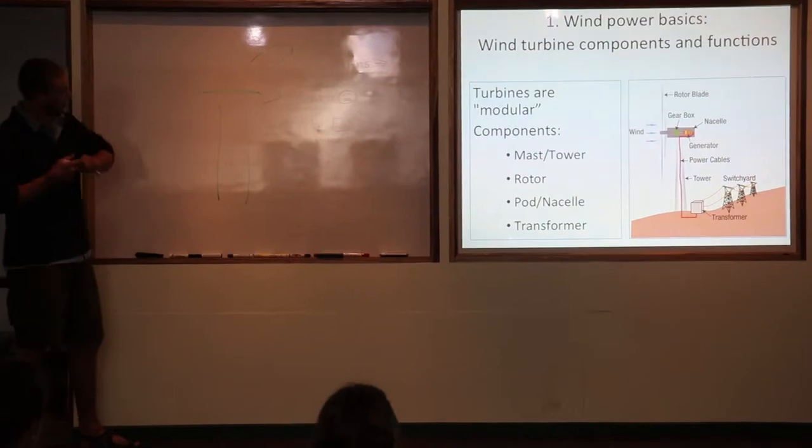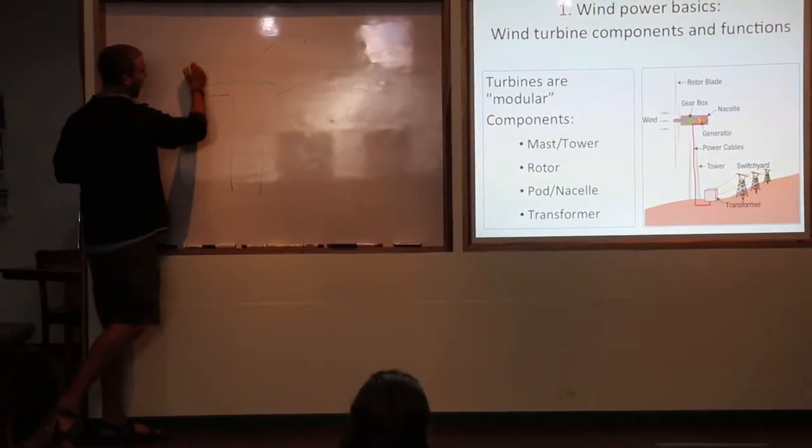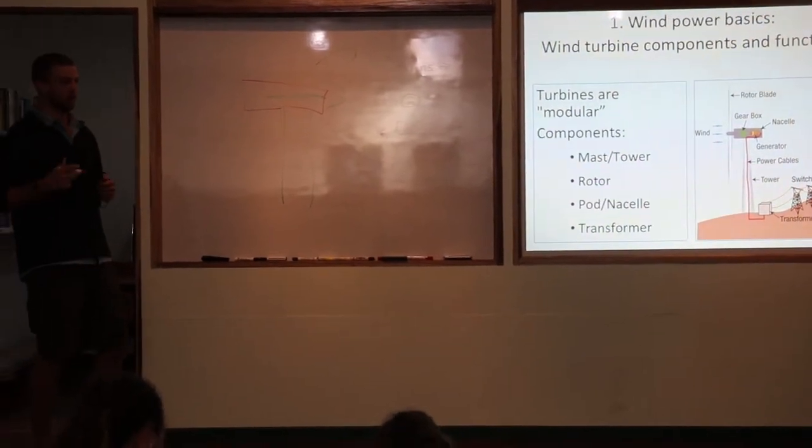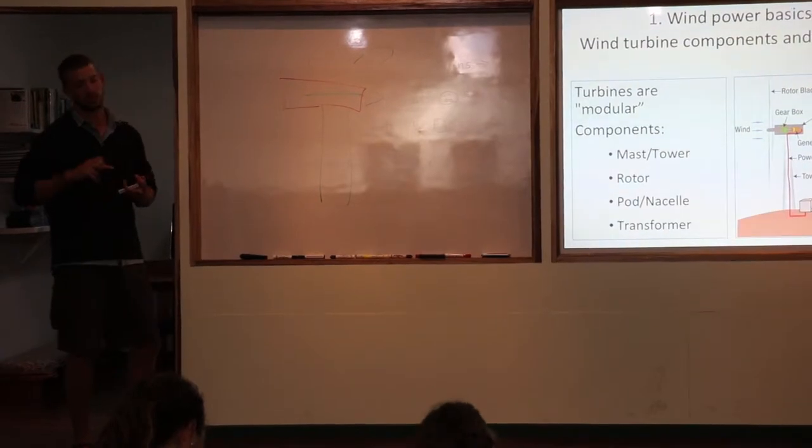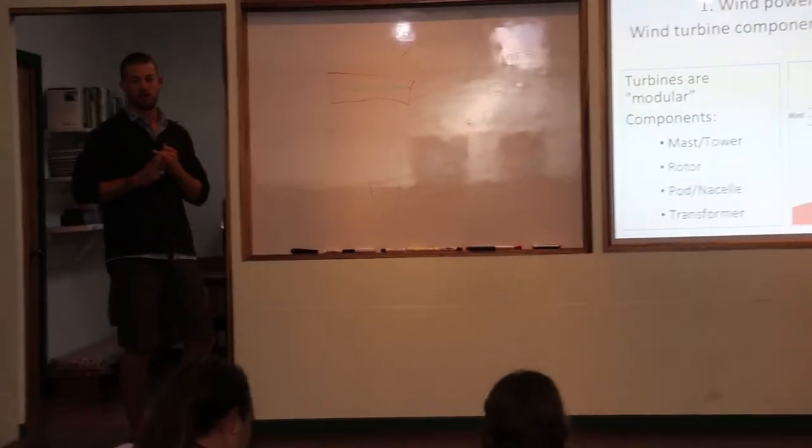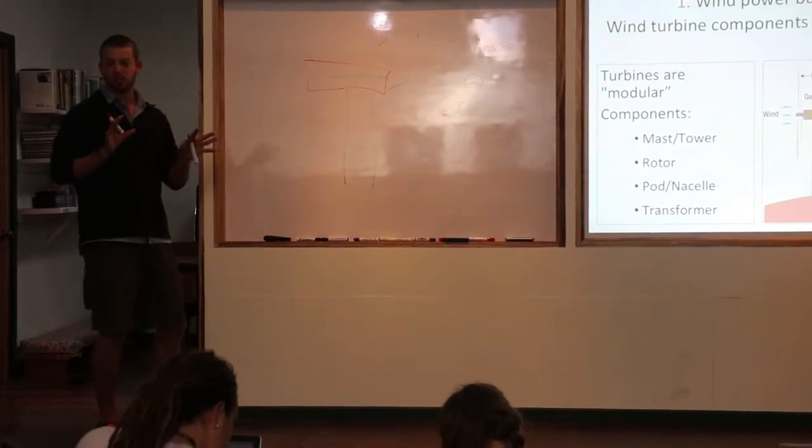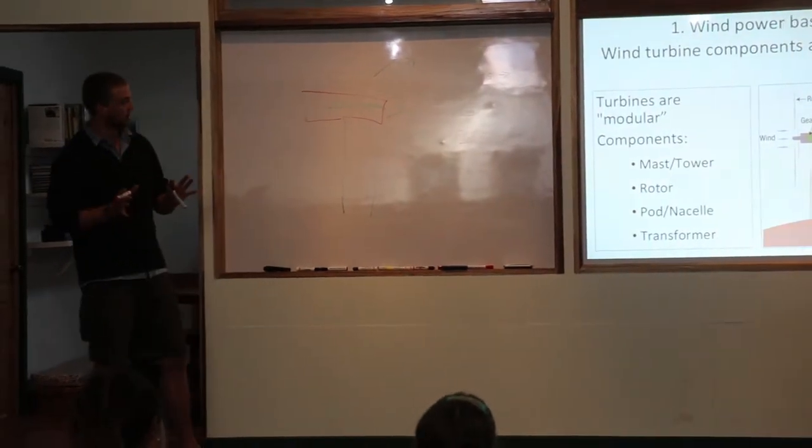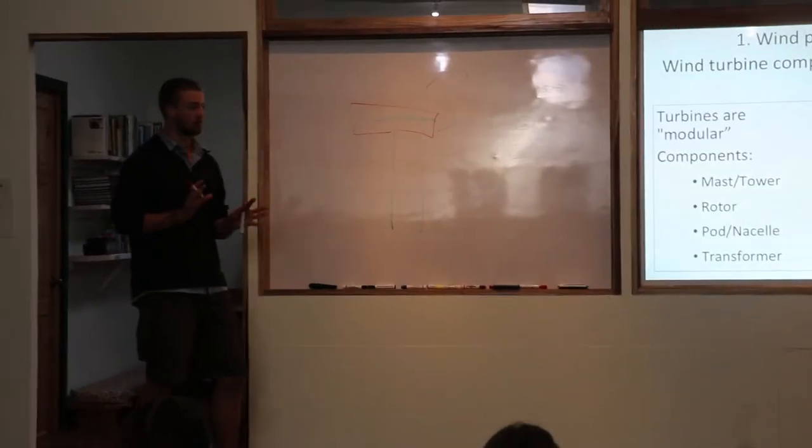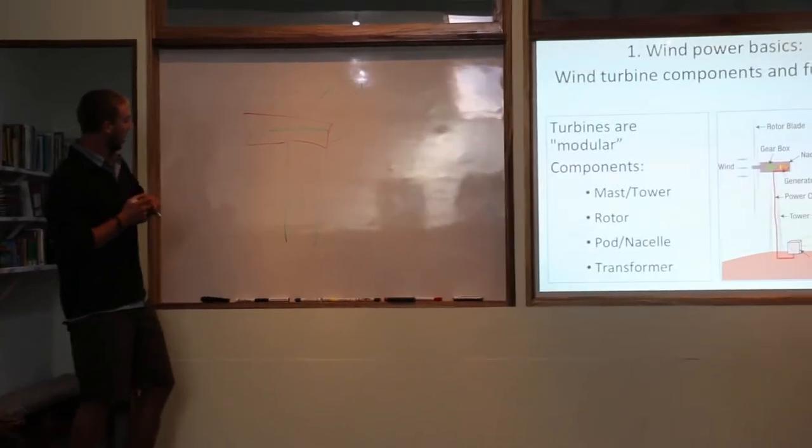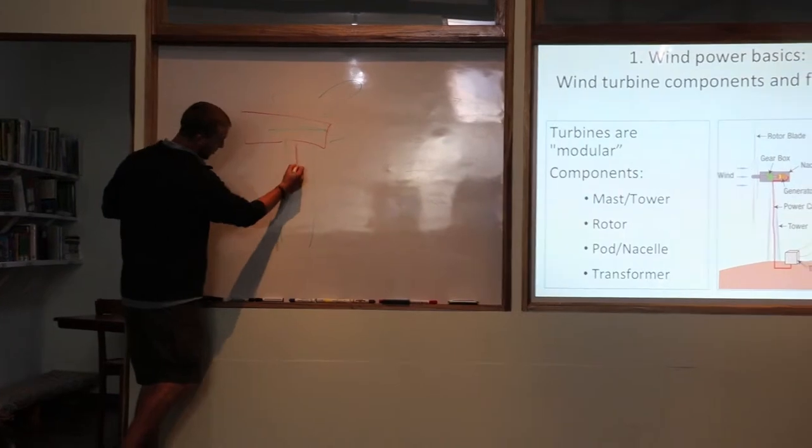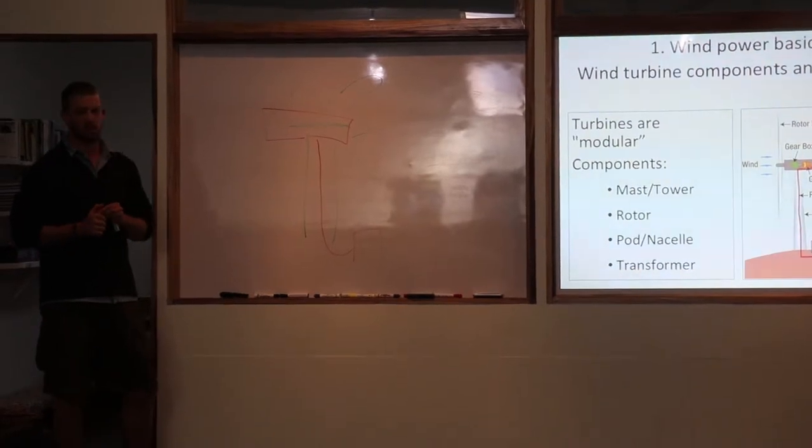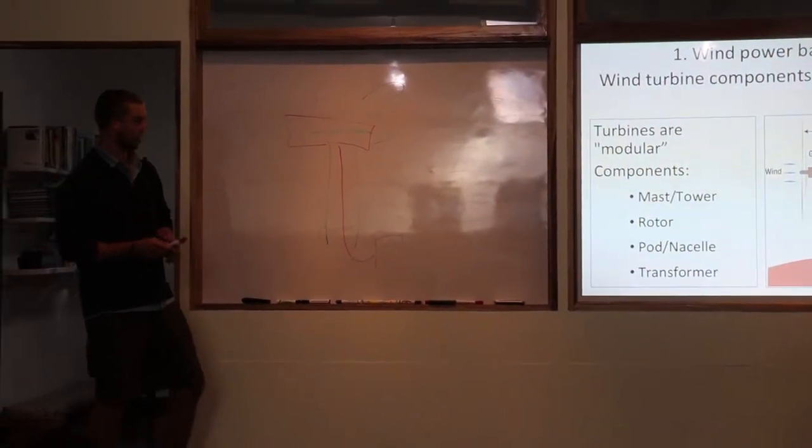Then you have this nacelle, which is the big box you see on the back of it. Inside of that, you're going to find a whole bunch of stuff. You have the gearbox, the generator, and there's computers in there that know the wind speed, the direction of the wind, when to turn on. Then when you get electricity coming out of it, it's going to go into your transformer down here. So those are the main parts of this turbine.